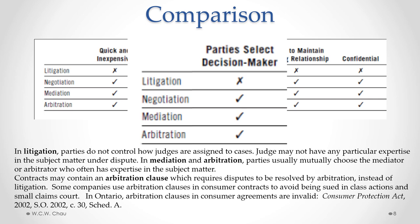With regard to the parties selecting the decision maker: in litigation, the parties do not control how judges are assigned to cases, and the judge may not have any particular expertise in the subject matter under dispute. In a mediation or arbitration, however, the parties usually mutually choose the mediator or arbitrator, and that person often has expertise in the particular subject matter. One thing to keep in mind is that contracts often contain an arbitration clause, requiring disputes under the contract to be resolved by arbitration instead of litigation.